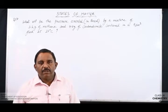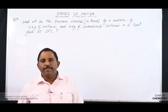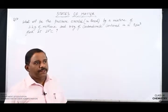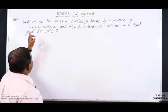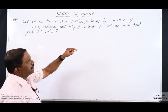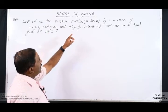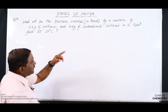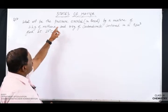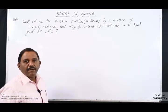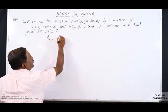Hello students, today we will work out some numerical problems based on our previous topic. From your NCERT exercise you can see question 5.7: what will be the pressure exerted in Pascal by a mixture of 3.2 grams of methane and 4.4 grams of carbon dioxide contained in a 9 decimeter cube flask at 27 degree centigrade? So we have to find out the pressure of the mixture.